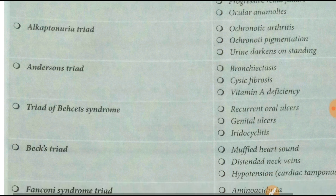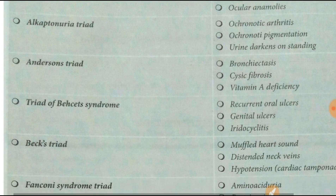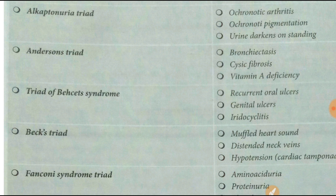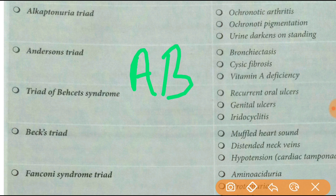Next is Anderson's triad: bronchiectasis, cystic fibrosis, and vitamin A deficiency. You can retain it by the mnemonic A-B-C — A for vitamin A deficiency, B for bronchiectasis, C for cystic fibrosis.